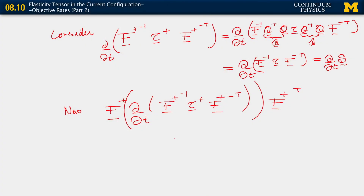This object is called — we're defining it with the symbol Lᵥ(τ), or in this particular case Lᵥ(τ⁺), because we're operating on τ⁺. This is called the Lie derivative. We're going to stop here for this segment, but when we come back, we're going to say a few more things and then relate it to a tangent.